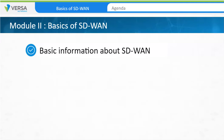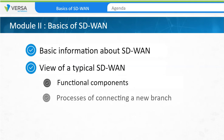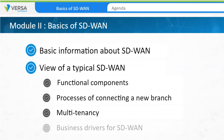Some basic information about software-defined WAN, or SD-WAN, and what a typical SD-WAN solution looks like. The main topics we'll cover are the main functional components, the process of connecting a new branch to an SD-WAN network, multi-tenancy in an SD-WAN, and some of the business drivers for SD-WAN.